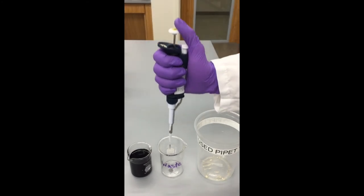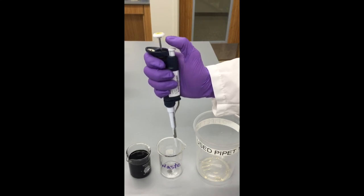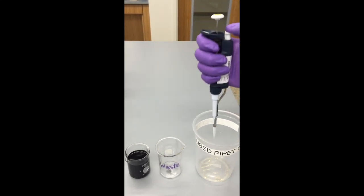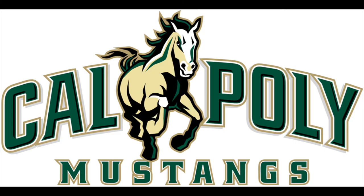To dispel the liquid, push the control button to the second level of resistance to ensure all the fluid is released. Then be sure to dispose of your tip in a used pipet jar or garbage can using the tip ejector. Thank you for watching this video on how to properly use a micropipet, a production of Chem 466.